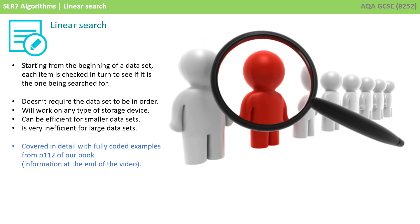The linear search can be performed on data in memory, perhaps stored in arrays or lists, and data stored in files as well. The algorithm is very straightforward. Starting from the beginning of the dataset, each item is checked in turn to see if it's the one being searched for.